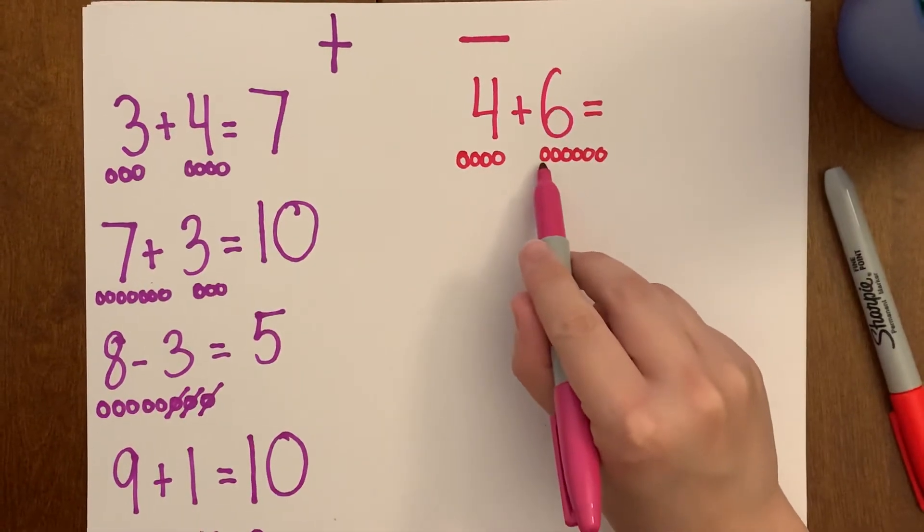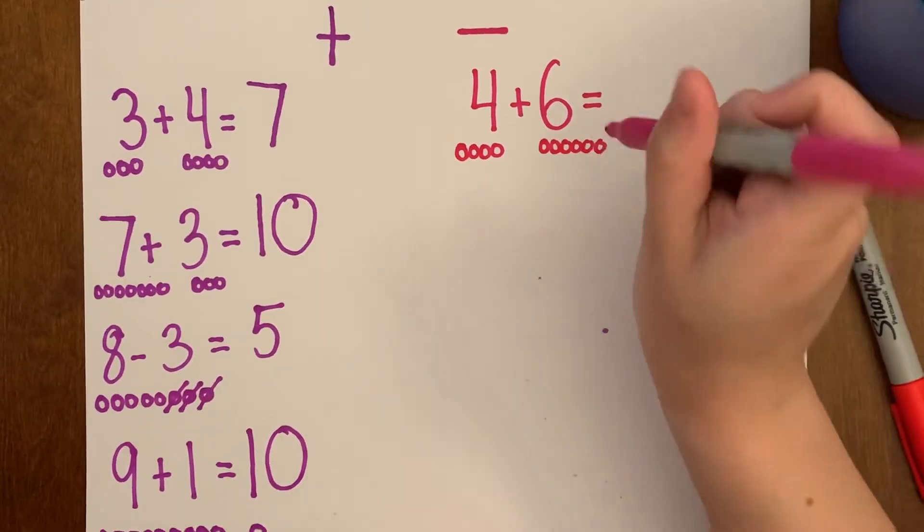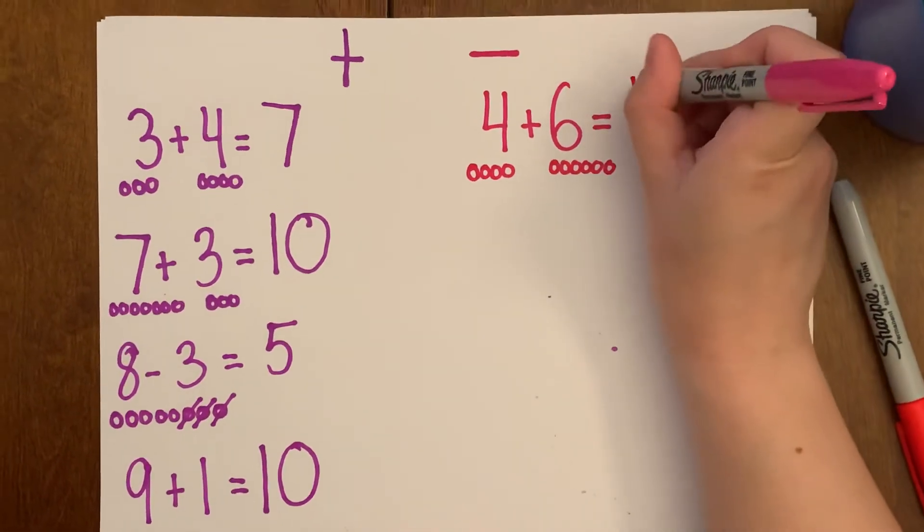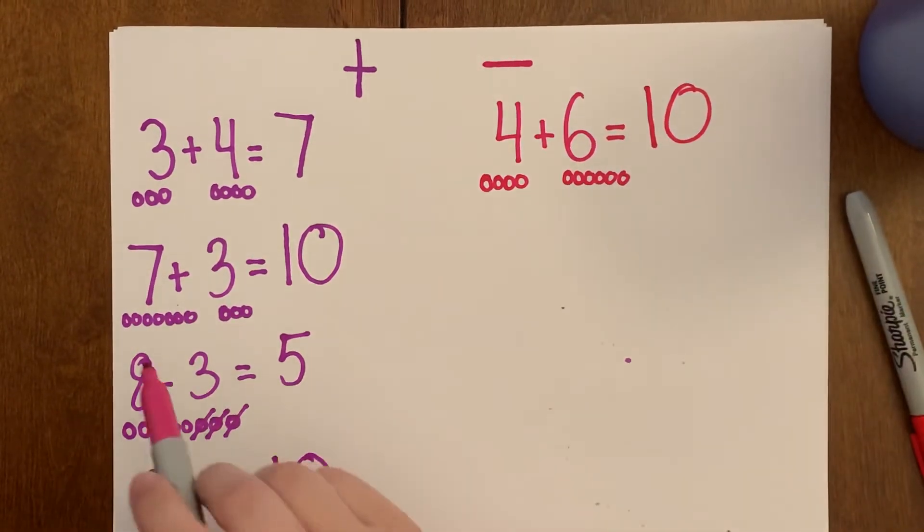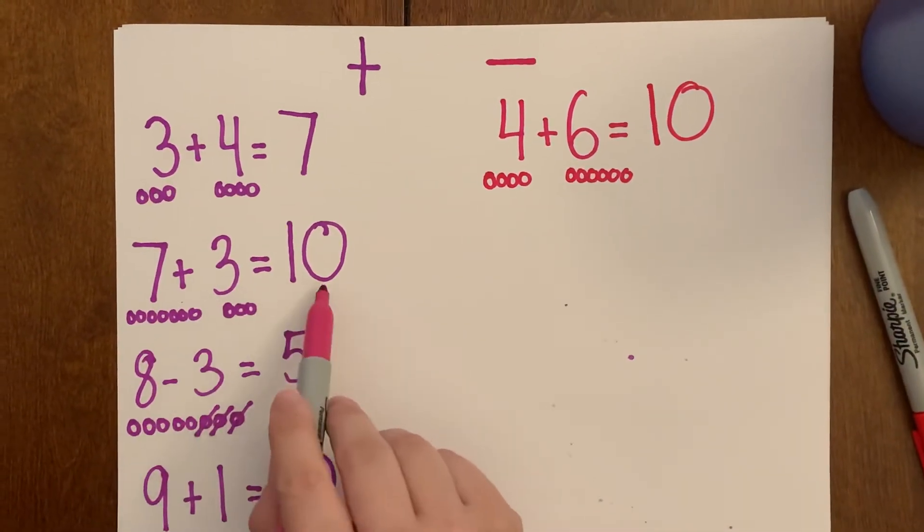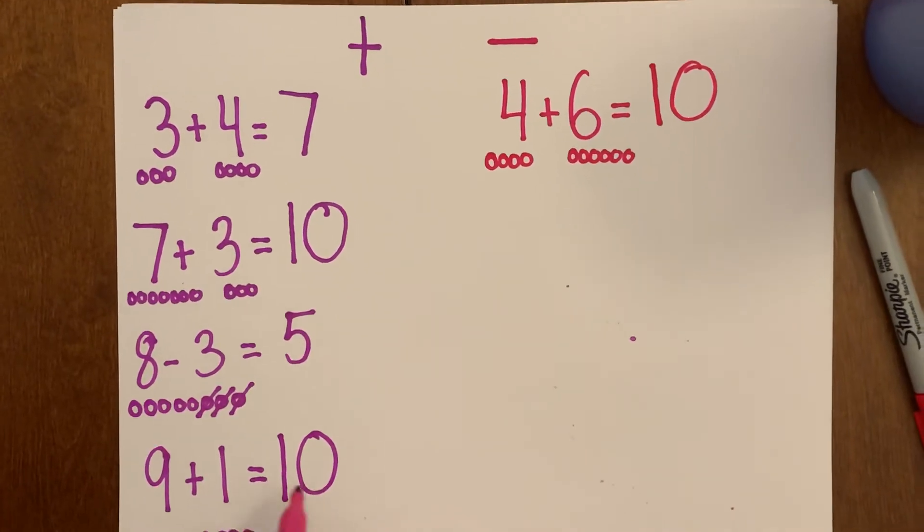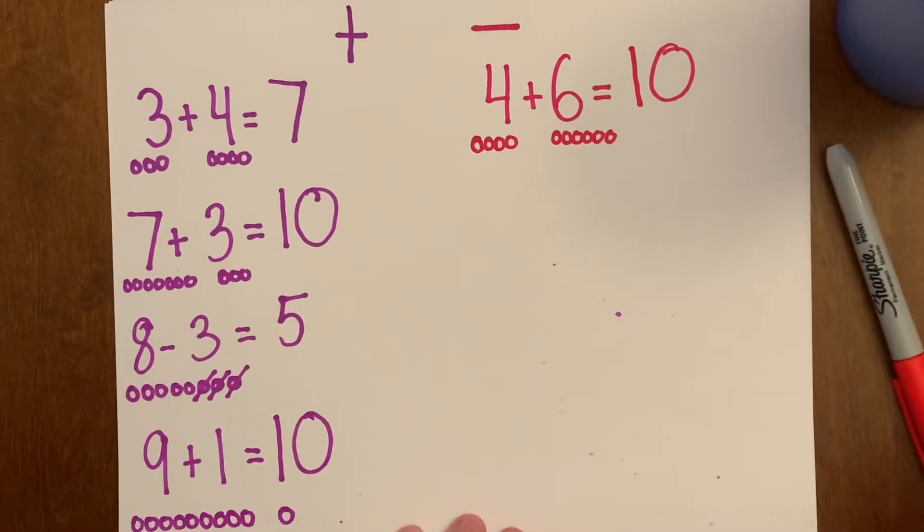Four, five, six, seven, eight, nine, ten. Wow, we've made ten in a lot of ways. Four plus six equals ten. Seven plus three equals ten. And nine plus one also equals ten. Wow.